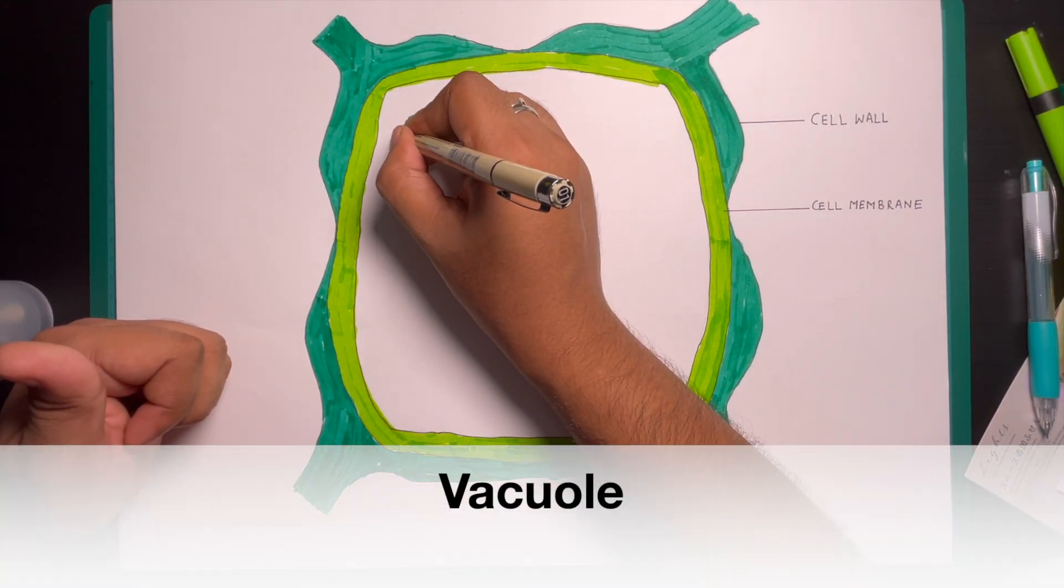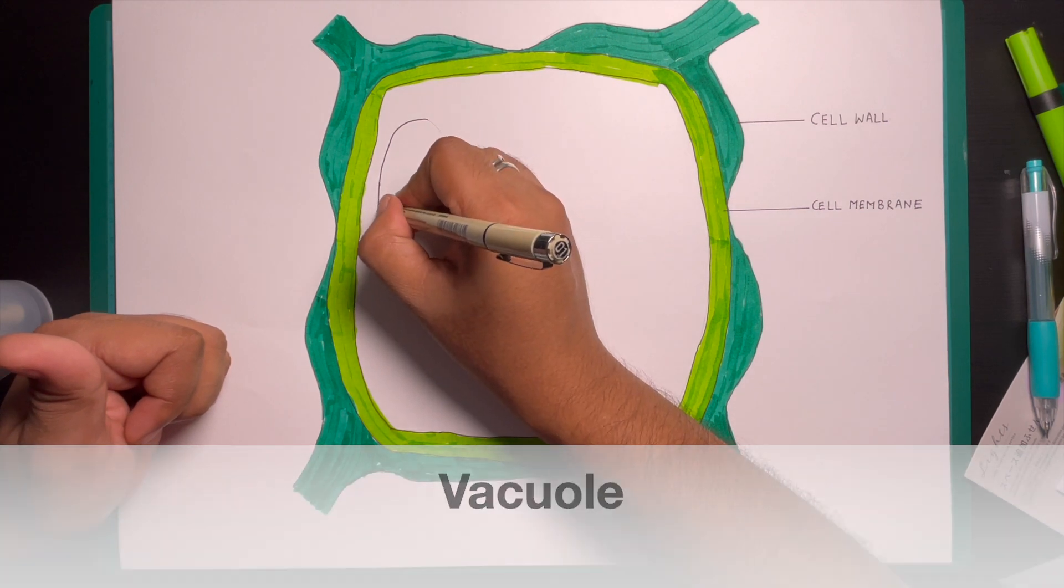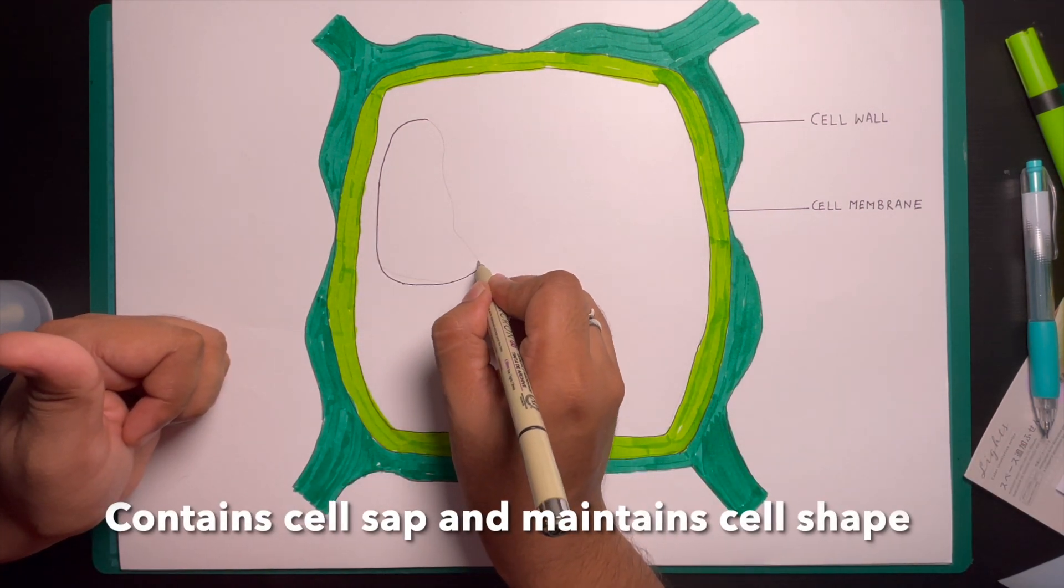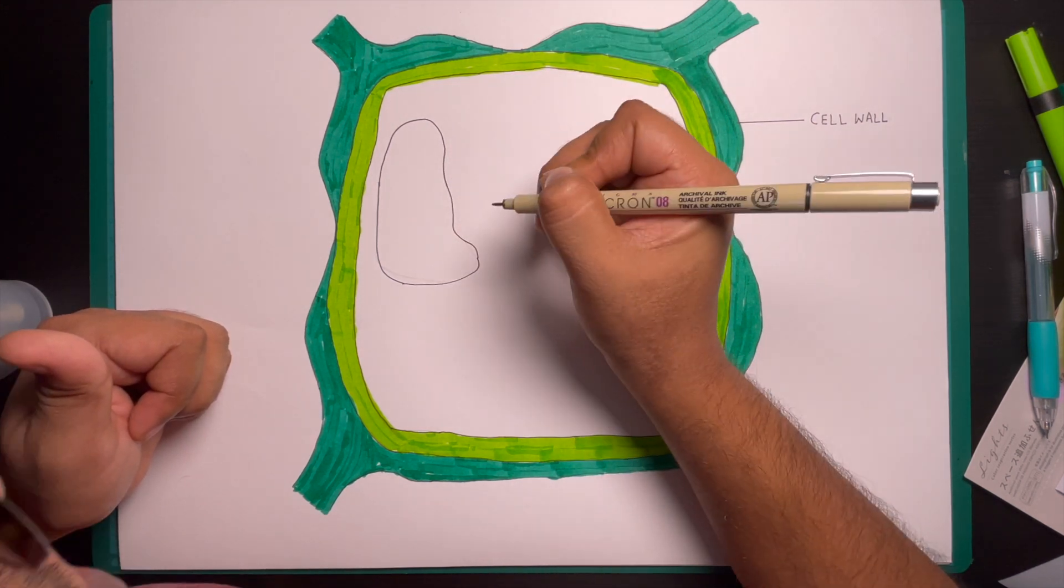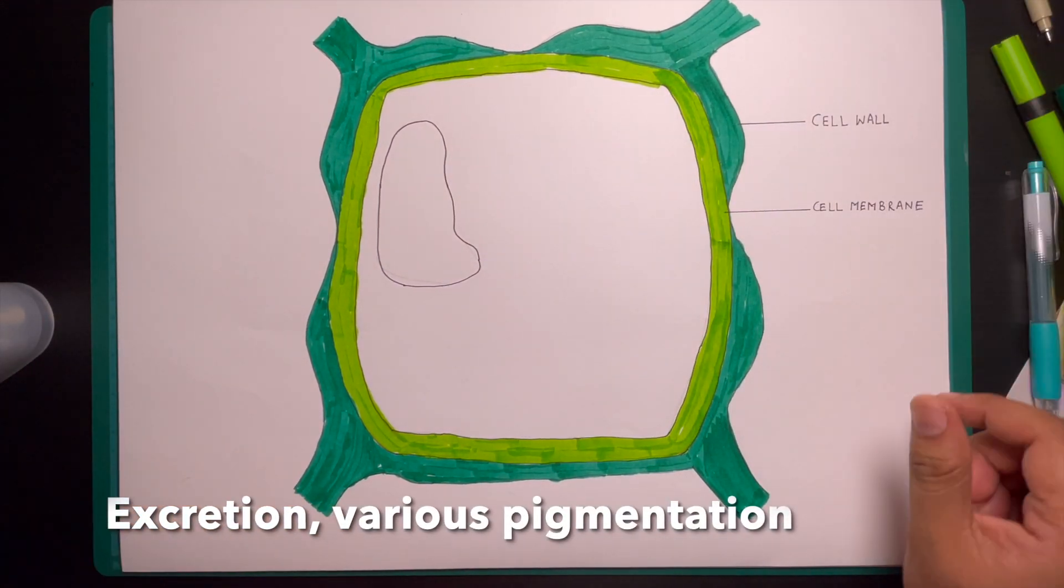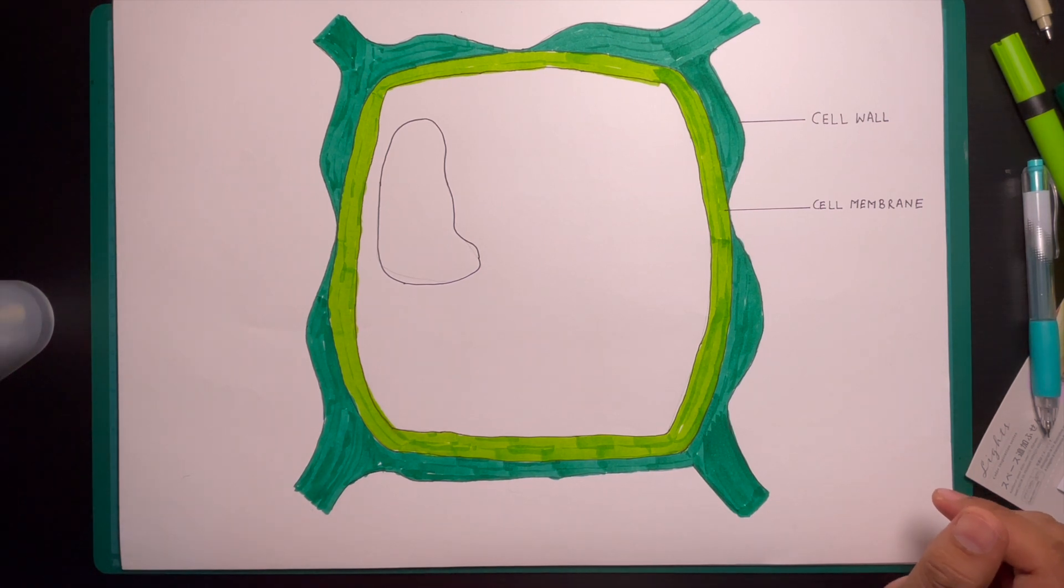They are large fluid holes surrounded by a single membrane of lipoprotein. They contain cell sap and maintain the cell shape. Vacuoles play an important role in excretion of plant. They are also responsible for various pigmentations of the plant.